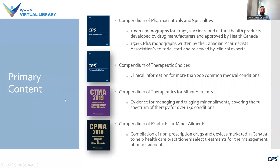The main content of CPS includes the Compendium of Pharmaceuticals and Specialties, which contains over 1,000 monographs for drugs, vaccines, and natural health products developed by drug manufacturers and approved by Health Canada. It also includes over 150 monographs written by the Canadian Pharmacists Association's editorial staff and reviewed by clinical experts.